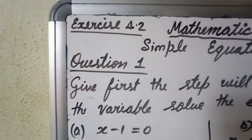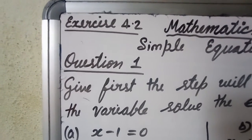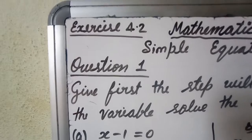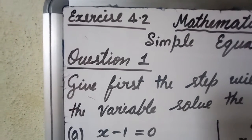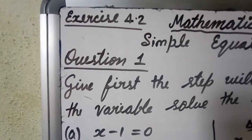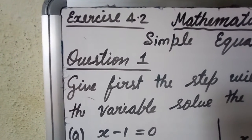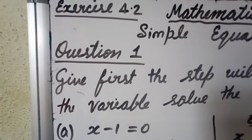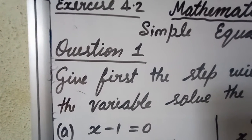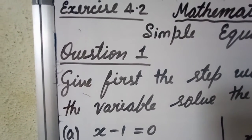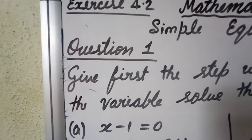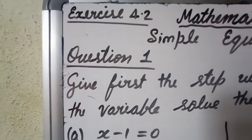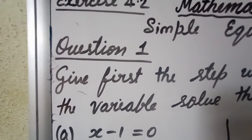Question A: x minus 1 is equal to 0. How do we separate the variable? There is minus 1 on the left side. If I add plus 1, then minus 1 plus 1 becomes 0, and only x will be left. But since it is an equation, whatever we add to the left hand side, we must also add to the right hand side, so the equation stays balanced.